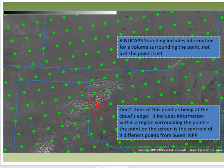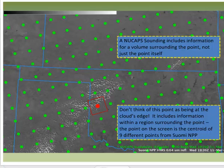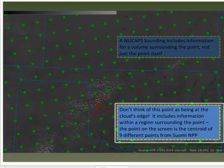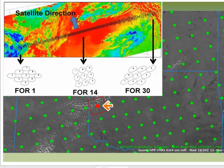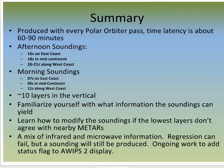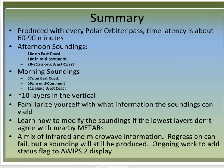What does a point mean in the NuCAPS sounding field? The NuCAPS sounding comprises data from nine CrIS fields of regard. The point plotted in AWIPS is the centroid of nine points, so information from the sounder is coming from the region surrounding that point. Rather than a point, you should consider the NuCAPS sounding as volumetric — it's telling you something about a cylinder of air in the atmosphere. The region sampled changes in size as you move from nadir out to the edge of the scan. Thank you for listening. This concludes the training on NuCAPS sounding data in AWIPS II.